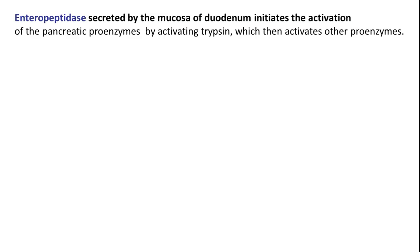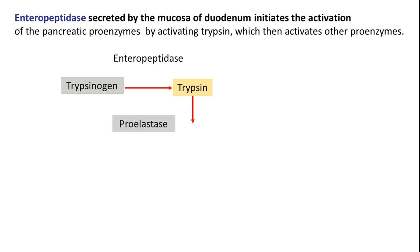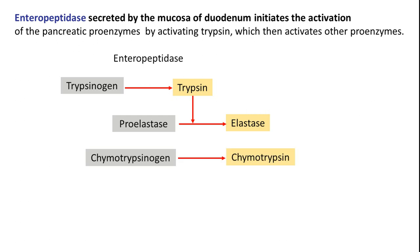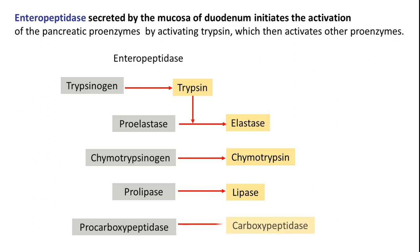Enteropeptidases secreted by the mucosa of the duodenum initiate activation of the pancreatic proenzymes by first activating trypsinogen to trypsin. Trypsin then activates all the other proenzymes: proelastase to elastase, chymotrypsinogen to chymotrypsin, prolipase to lipase, and procarboxypeptidase to carboxypeptidase. Therefore, trypsin is the key enzyme — the release and activation of trypsin determines the extent of digestion.